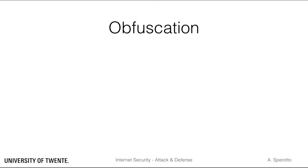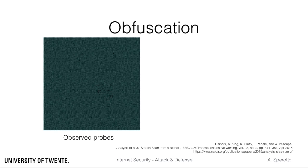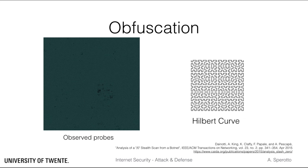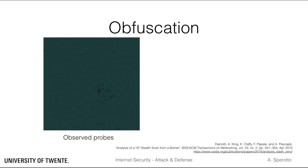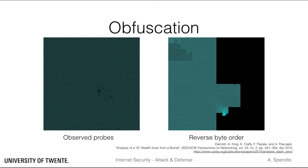Sometimes more complex techniques are in use. This picture is a planar representation of a /8 network block using the so-called Hilbert curve, by which IPs that are close in an address sense will also be close in a Euclidean sense. Each point represents an IP address. The colored points are IP addresses contacted during a distributed scan on the SIP protocol performed by the Sality botnet. The scan seems random; however, analysis of the traffic shows it was actually performed in a sequential manner but in reverse IP byte order. If you reverse the order of the bytes in the IP addresses, the scan appears sequential and highly structured. Scanning in reverse byte order was used to obfuscate the scan and distribute the probes in a seemingly random way.